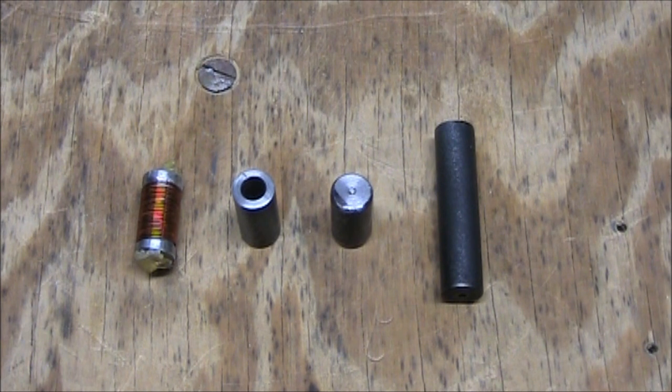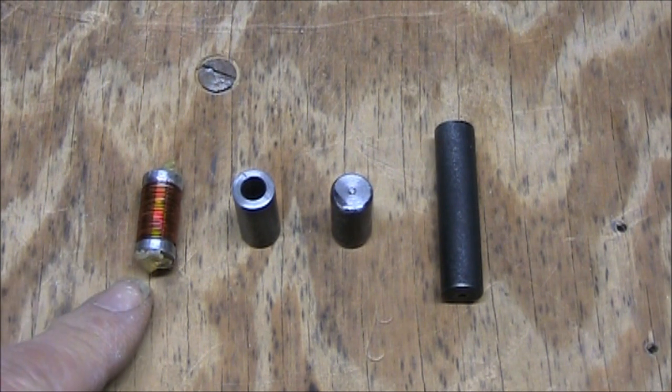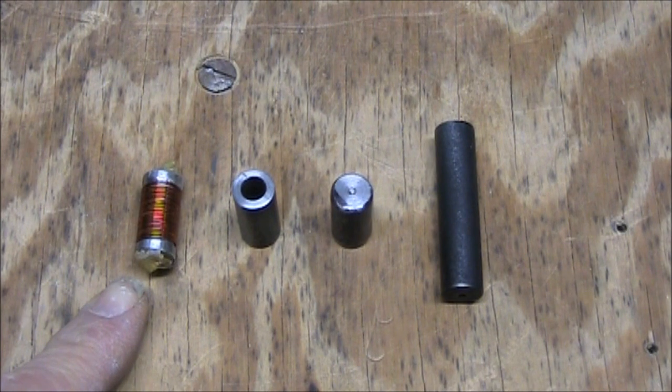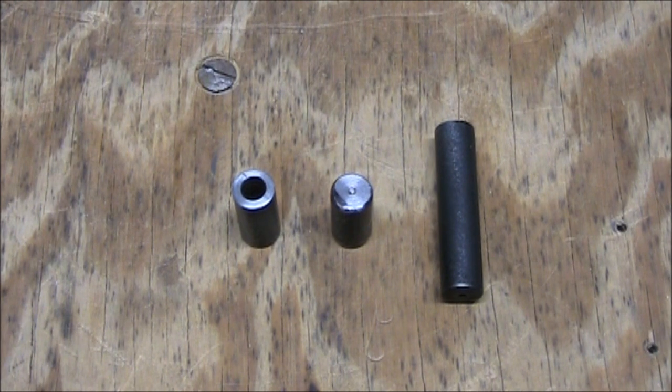Here are our ballistic results. The wound steel spool we did 96 feet per second, didn't do very well. The hollow core we did 125 feet per second, that's 6 foot-pounds. The solid one, 120 feet per second, 8 foot-pounds. And that long rod on the right we did 90 feet per second, 10 foot-pounds.